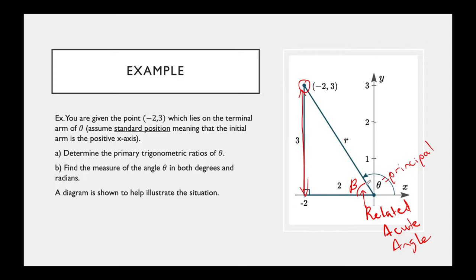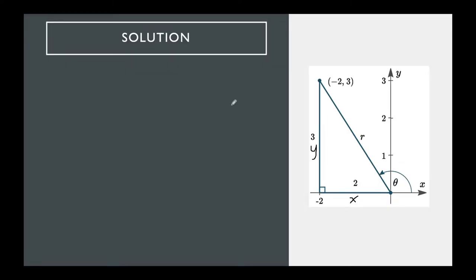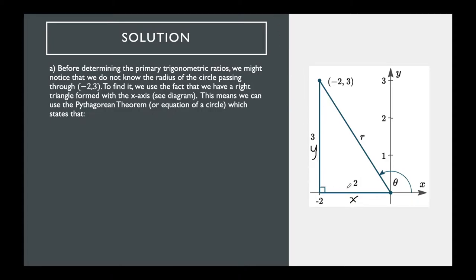I'll label the related acute angle as beta (β). The opposite side is 3, and the adjacent side is 2 — but we need to include the negative sign, so x = −2. We also need to find the radius, which is the hypotenuse of this right triangle. So we need to determine x, y, and r before finding the trig ratios.